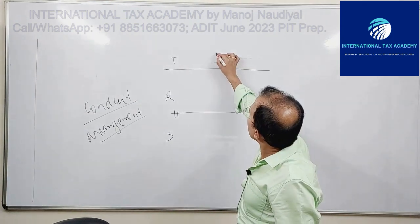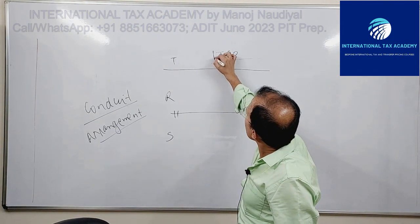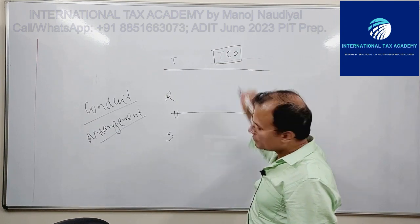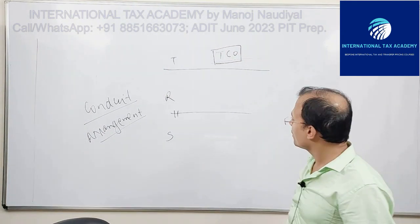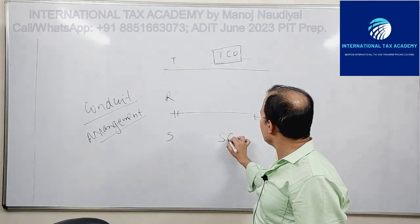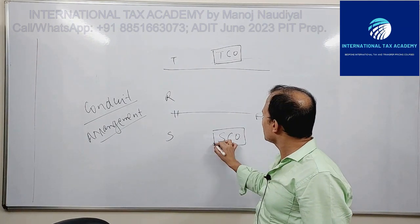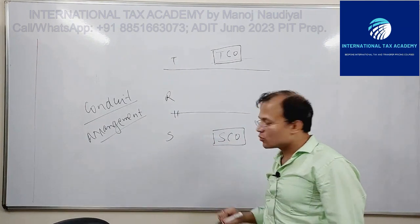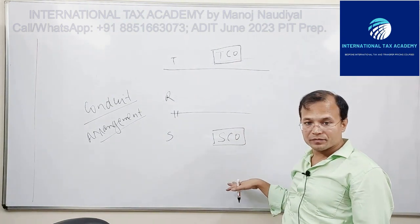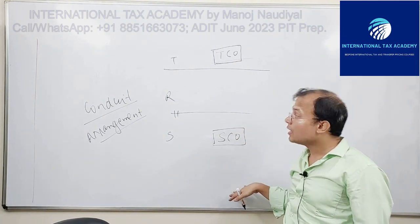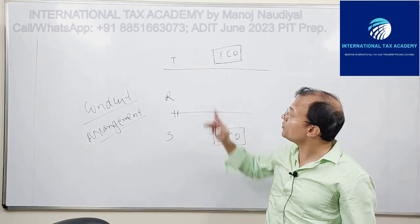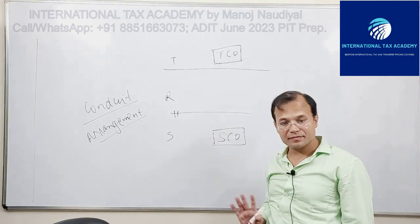You have Tyco and you have Esco. Esco is a subsidiary of Tyco, and there is a treaty between RS. There is no treaty between T and Esco.